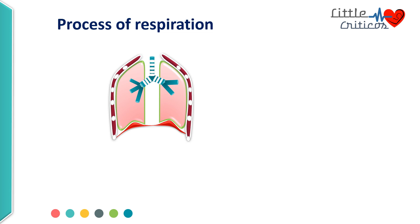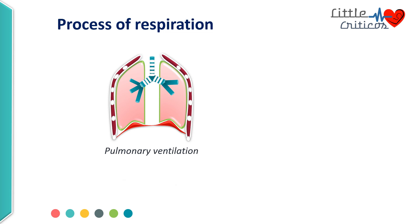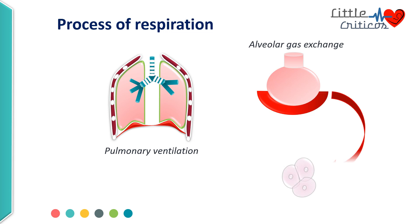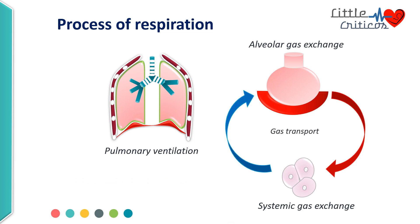There are four key steps in respiration: pulmonary ventilation, alveolar gas exchange, systemic gas exchange, and gas transport. Pulmonary ventilation involves exchange of oxygen and carbon dioxide between the atmosphere and lung alveoli. Alveolar gas exchange denotes the exchange of gases between the lung alveoli and blood vessels. Once the gases are exchanged into the blood vessel, they are transported to the cells to facilitate systemic gas exchange. The carbon dioxide released from the cells gets transported to the lungs by gas transport.